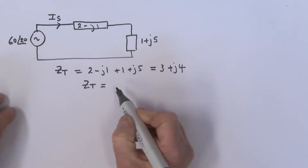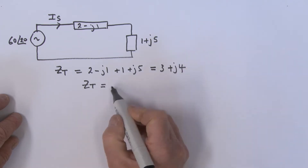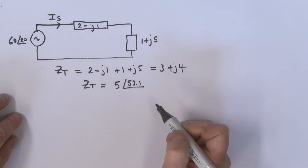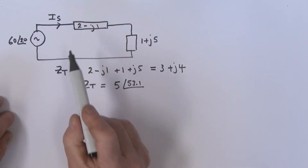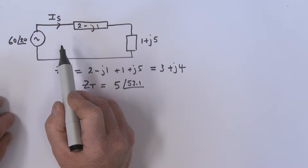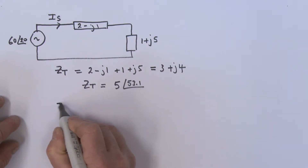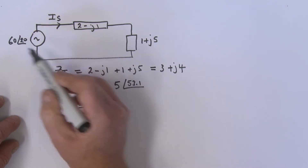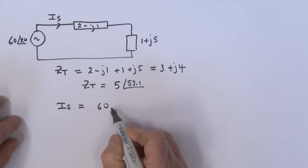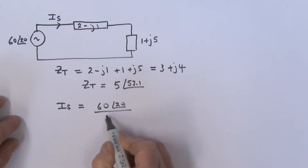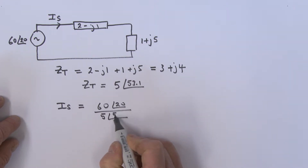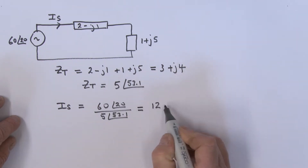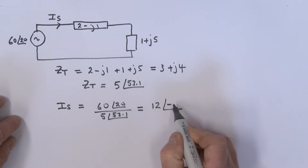Now it's in rectangular form, so let's convert that to polar form. Z_T = 5 ∠53.1°. Now we're in a position to find I_s. Using RMS values, I_s = V / Z_T = 60∠20° / 5∠53.1°, which gives us 12∠−33.1°.